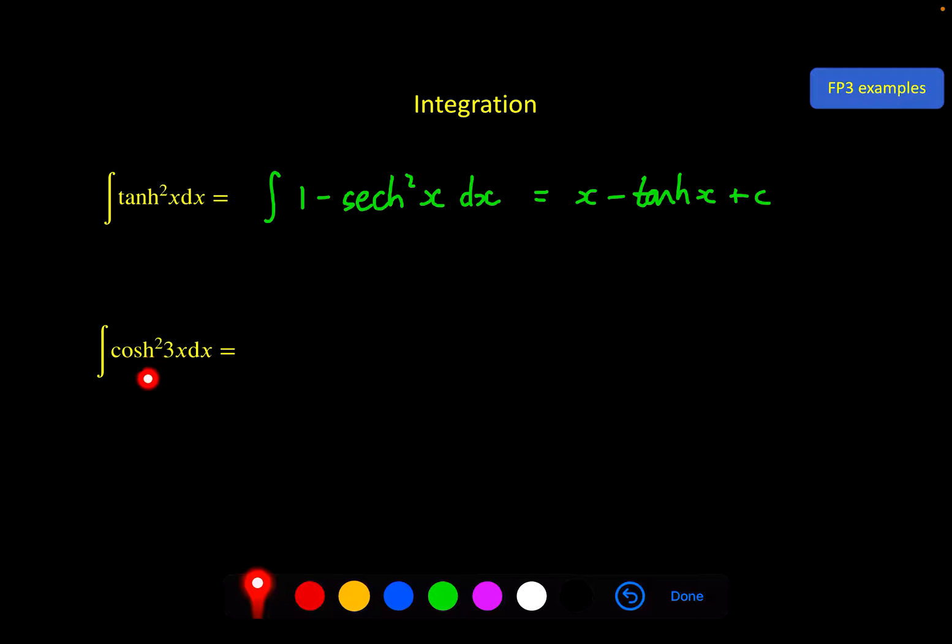For this one, normally when you're dealing with a cos squared, you would turn that into a cos 2x. I'm going to do something very similar. Remember, at this point, your Osborne's rule, and that might make it easier. This is equal to the integral of half, oh, it's a plus, half cosh of 2x, but my x is actually a 3x, so that becomes a 6x. And if I integrate that, I get x over 2 plus 1 over 2 with the 6, so 1 over 12, sinh 6x plus c.